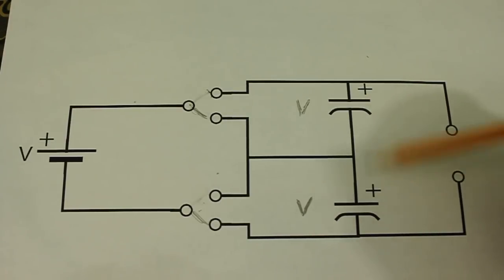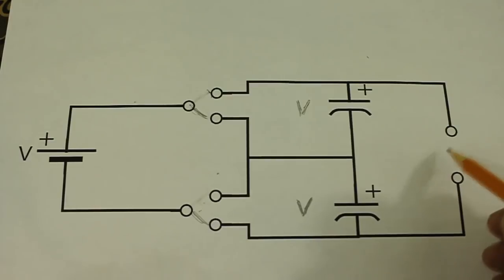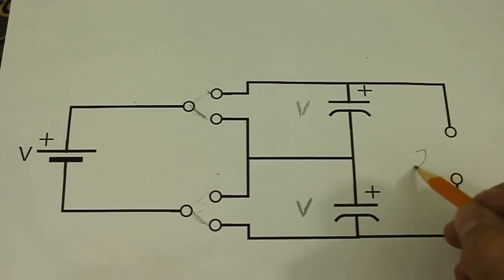But note that these two capacitors are in series and therefore the voltages add up. And here at the output, we will have double the input voltage.